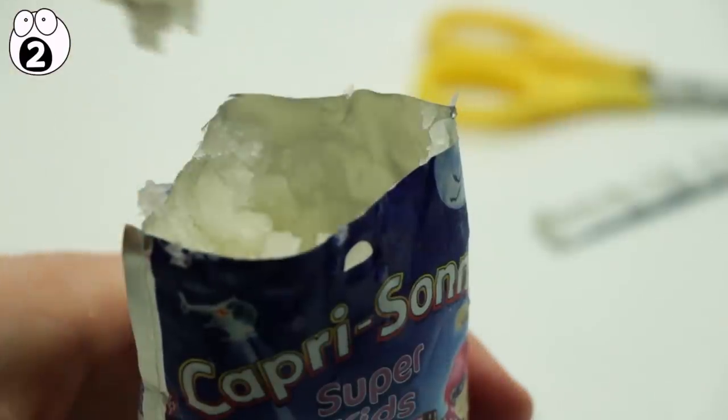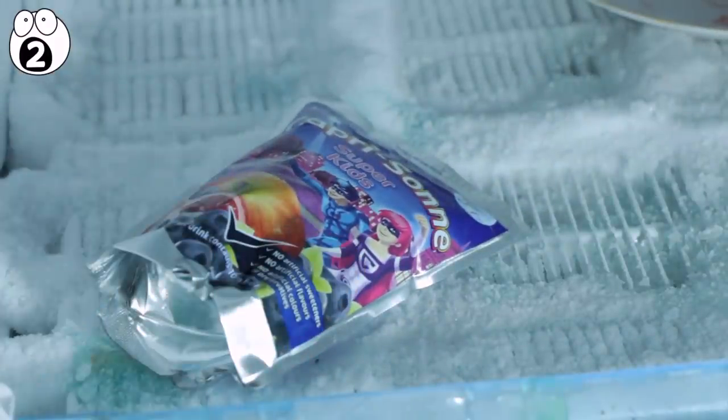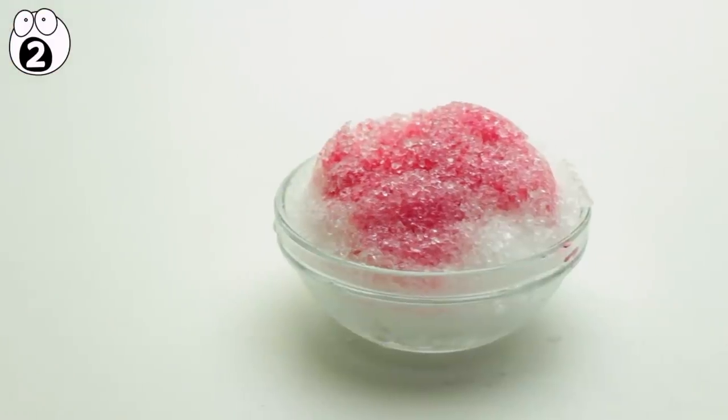Here's an even simpler way to make some slushy refreshments. Grab some juice packs of your favorite flavor and stick them in the fridge for several hours or overnight. Cut the tops open and enjoy. If you don't have any juice packs, then try this.